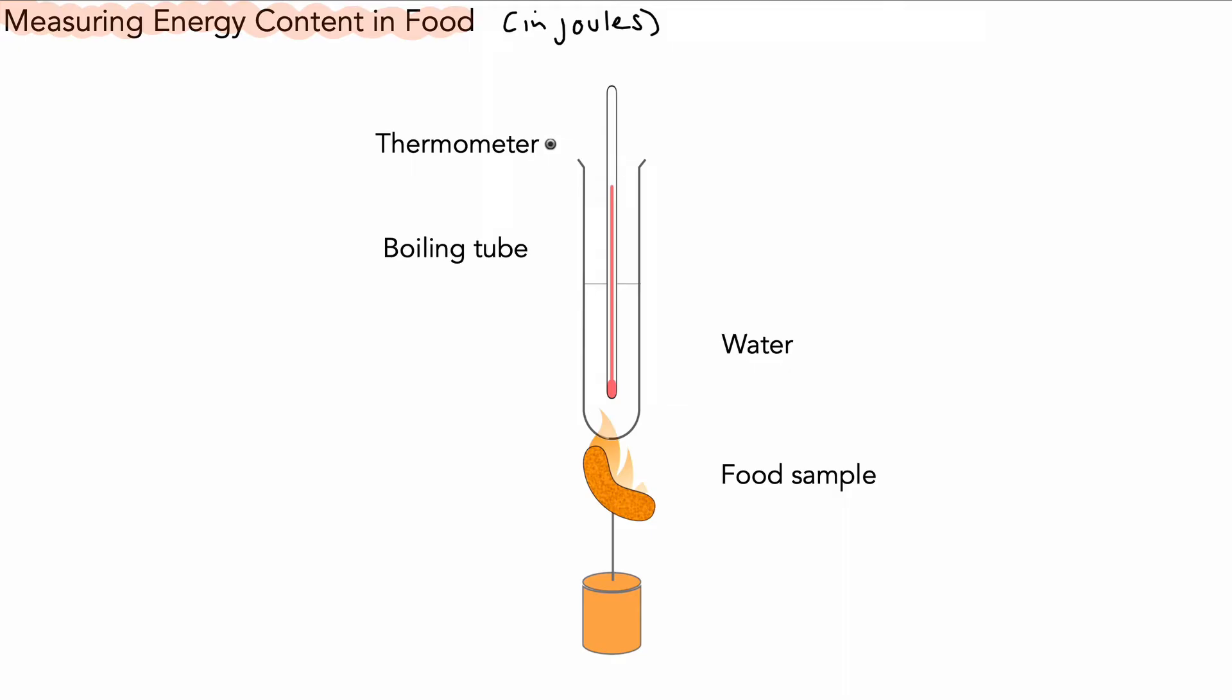We have a thermometer which is in some water. The water is in a boiling tube, and at the bottom we have a food sample that we are burning. This is a cheese snack that we're burning so that we can release the heat energy from it.